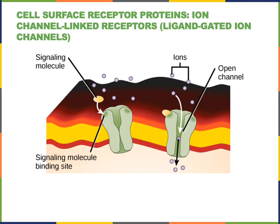When the intercellular signaling molecule is polar and too large to pass through the plasma membrane, it will have to bind to a cell surface receptor protein — a receptor protein that's embedded in the plasma membrane. The signaling molecule is also known as a ligand, and the ligand will bind to a binding site on the receptor, causing a change in the shape of the receptor that can then stimulate the production of an intracellular signal.